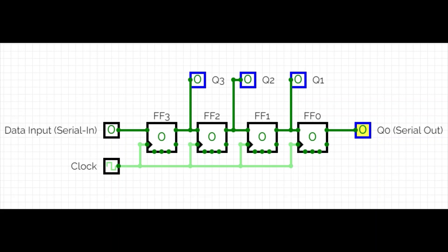Hello friends, in this video I will tell you how a shift register works. This is a circuit for a shift register using CircuitWork software. We have D flip-flop 1, D flip-flop 2, D flip-flop 3, and D flip-flop 4, named FF3, FF2, FF1, and FF0. This is the D input.